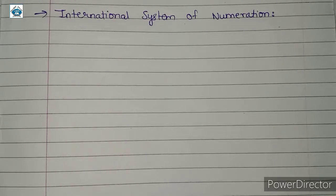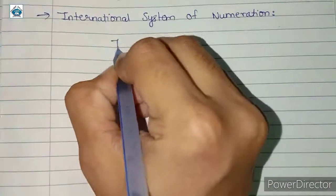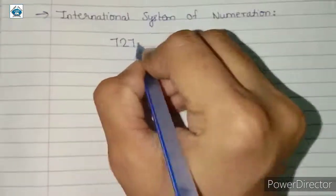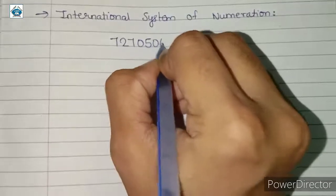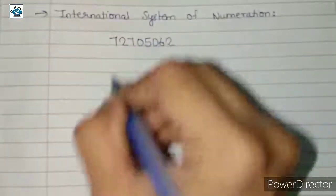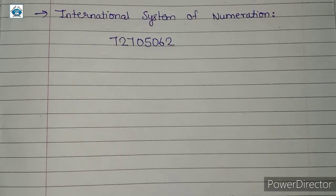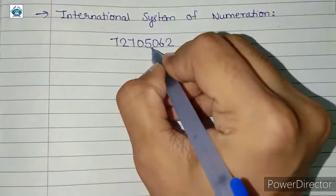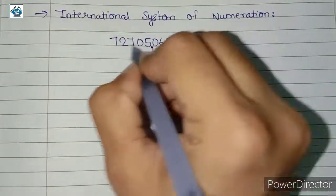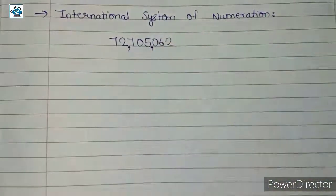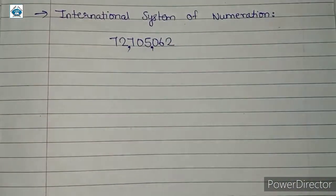Consider any large number: 72705062. If we were to put commas while writing this number, then the first comma will come after 3 digits, and the second comma will also come after 3 digits. In the international system of numeration, commas are placed after every 3 digits from the right.